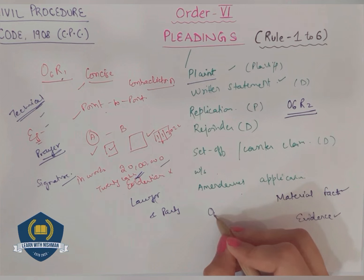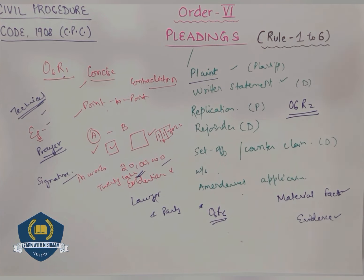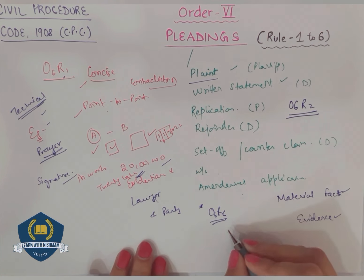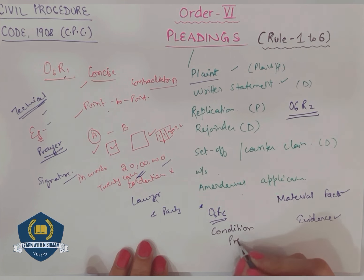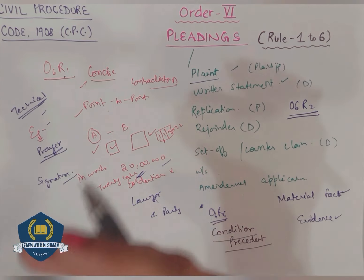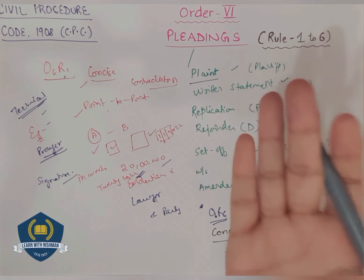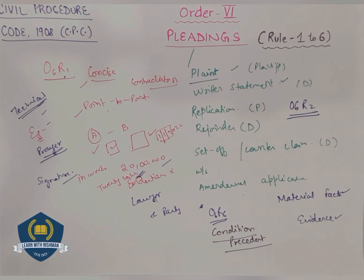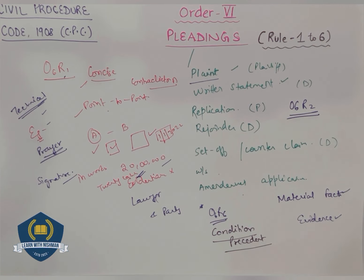Now come to Order 6 Rule 6 - very very important. Order 6 Rule 6 is about condition precedent. What is condition precedent? Suppose there was a contract between A and B that A will sell his house to B. Now the condition was that B will purchase the house only if A creates a swimming pool in that house. The condition precedent was that B will purchase the property only if A has created a swimming pool in the house. Now A didn't create the swimming pool. B refuses to purchase the house - and rightly so, because that was the condition. Then A files a suit claiming damages and specific performance, saying that the condition precedent has not been performed.